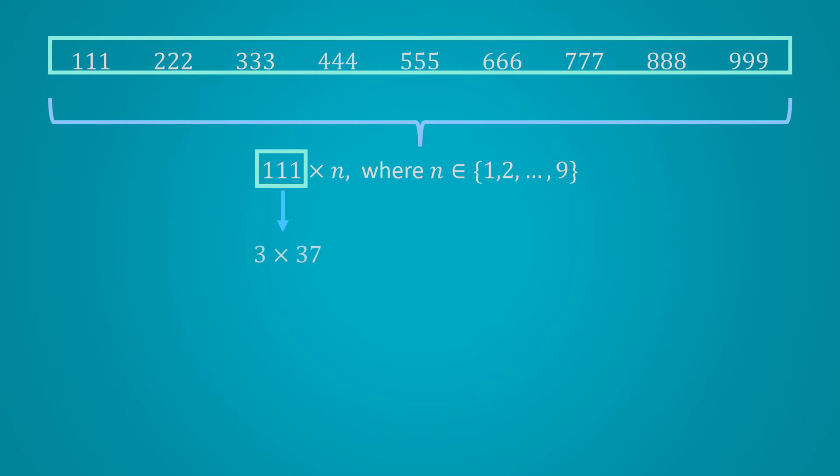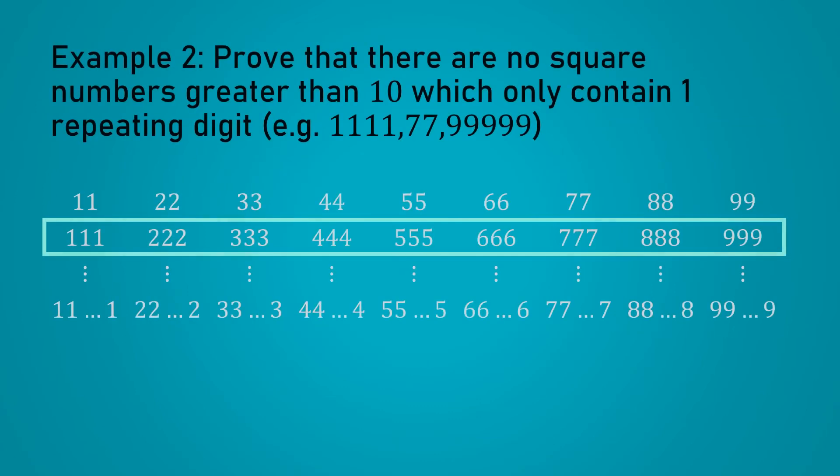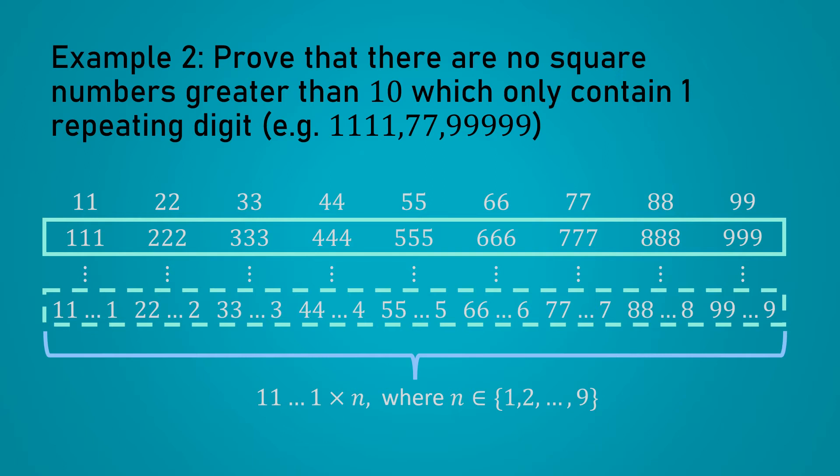Since we are multiplying something between 1 and 9 to this, 37 will only appear exactly once in the prime factorization. And since every prime factor should appear an even number of times in a square number, this shows that none of them are square numbers. Let's zoom back out to the entire problem then. Can we generalize this to more digits? We can still write everything here as a bunch of 1s multiplied by something between 1 and 9. The next step would be to look at this bunch of 1s. But there's an important problem here. We don't have a general factorization of this for an arbitrary number of 1s.